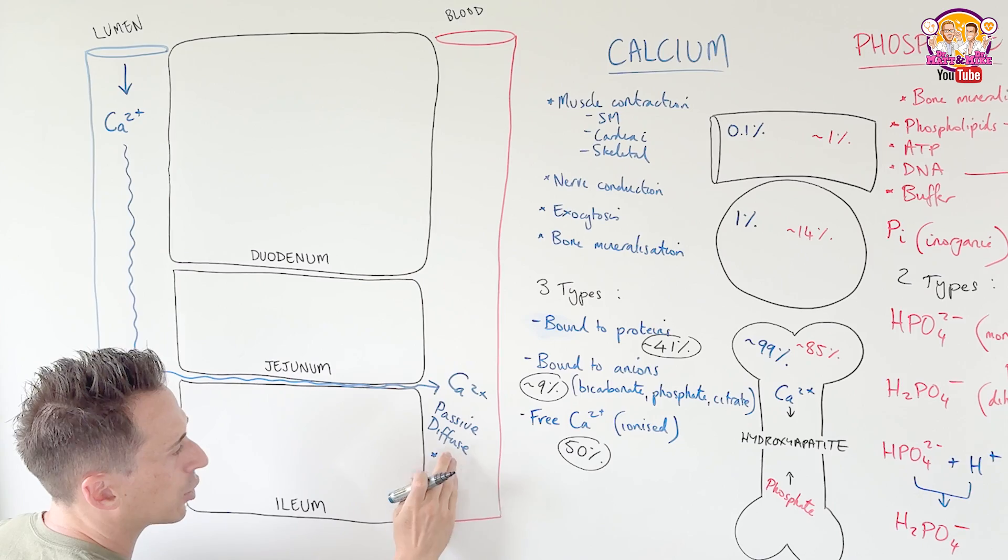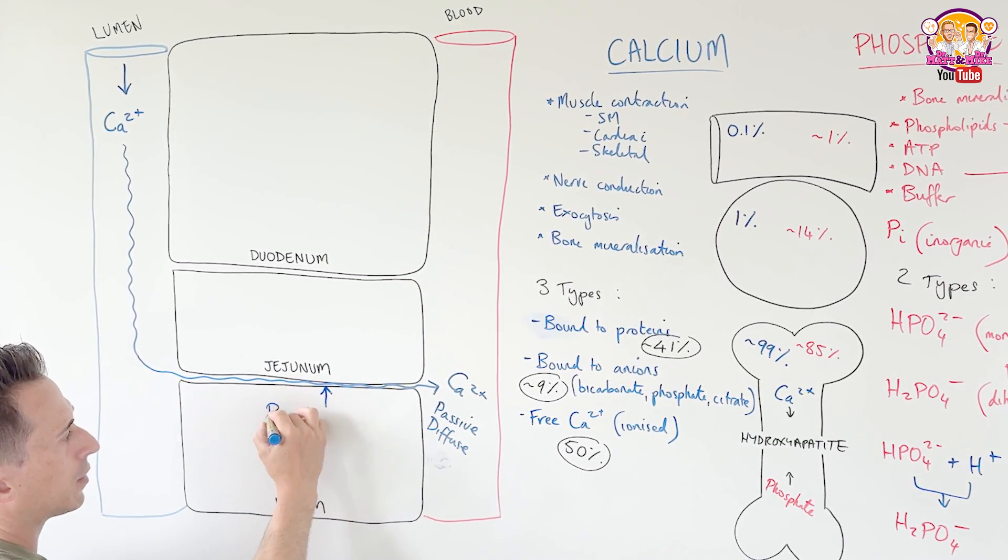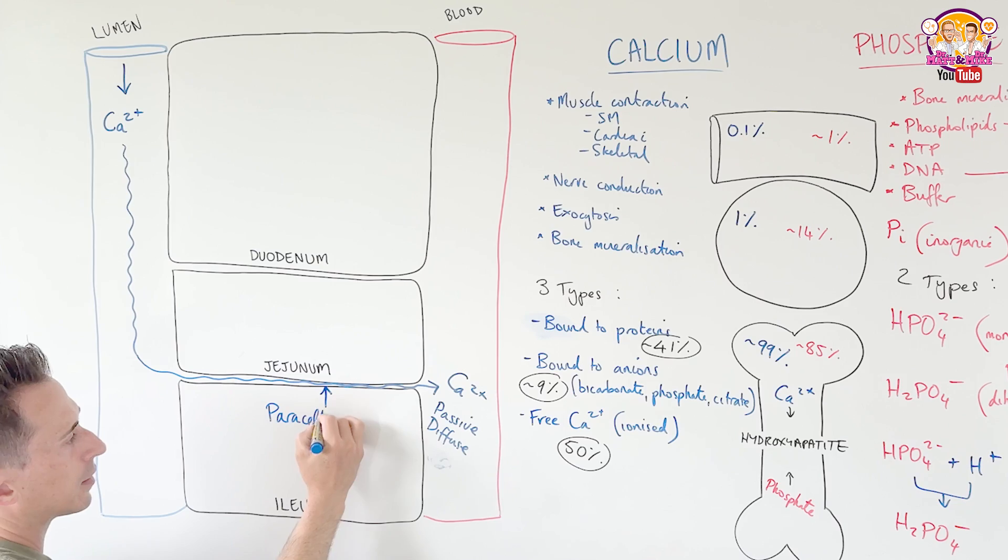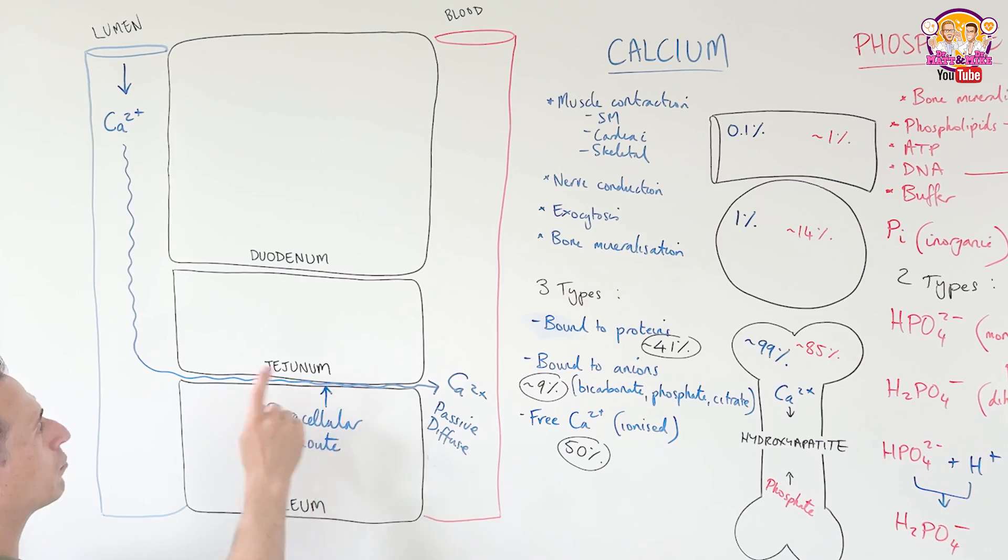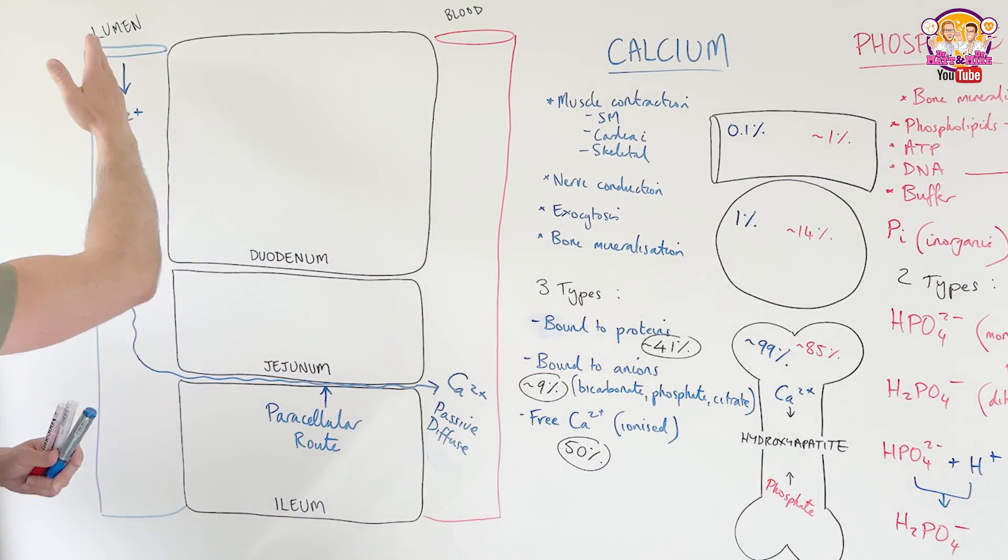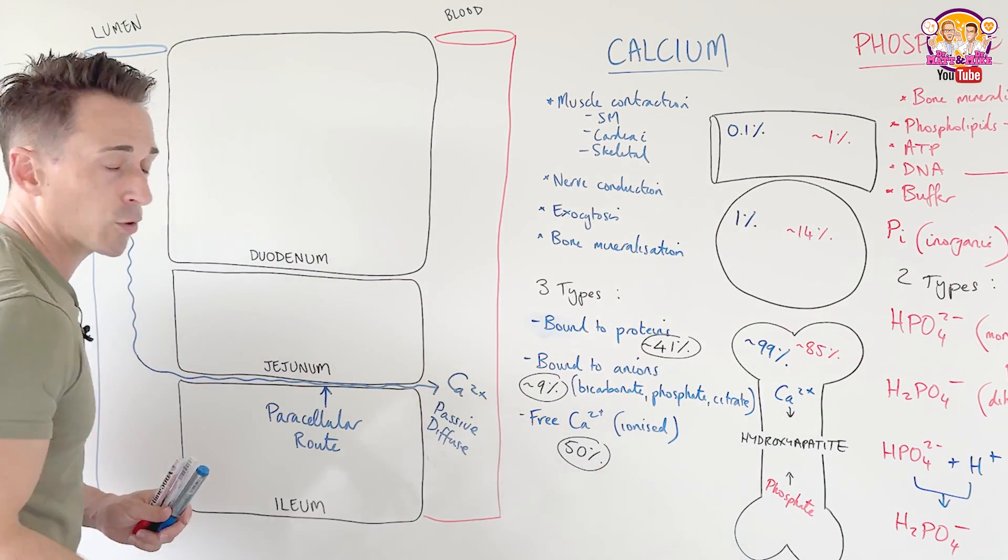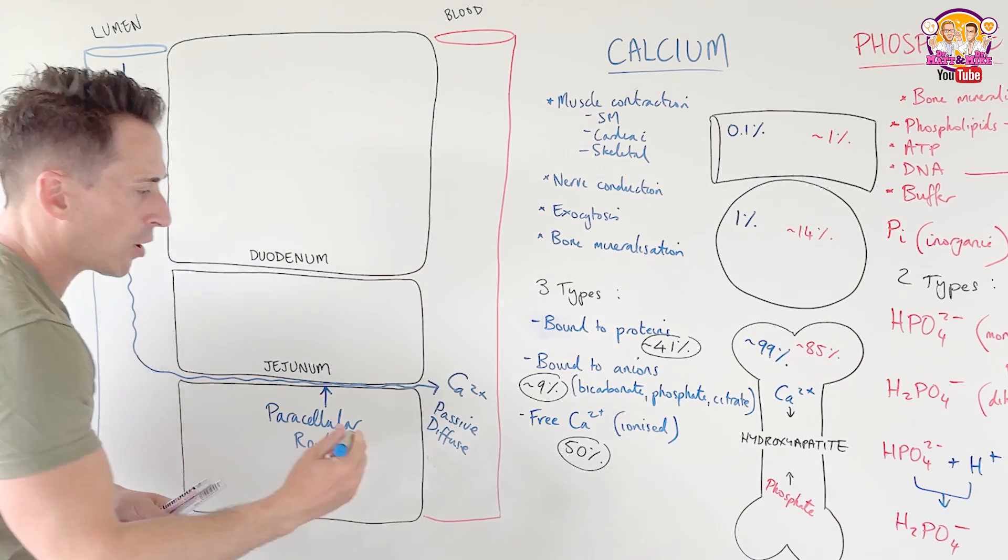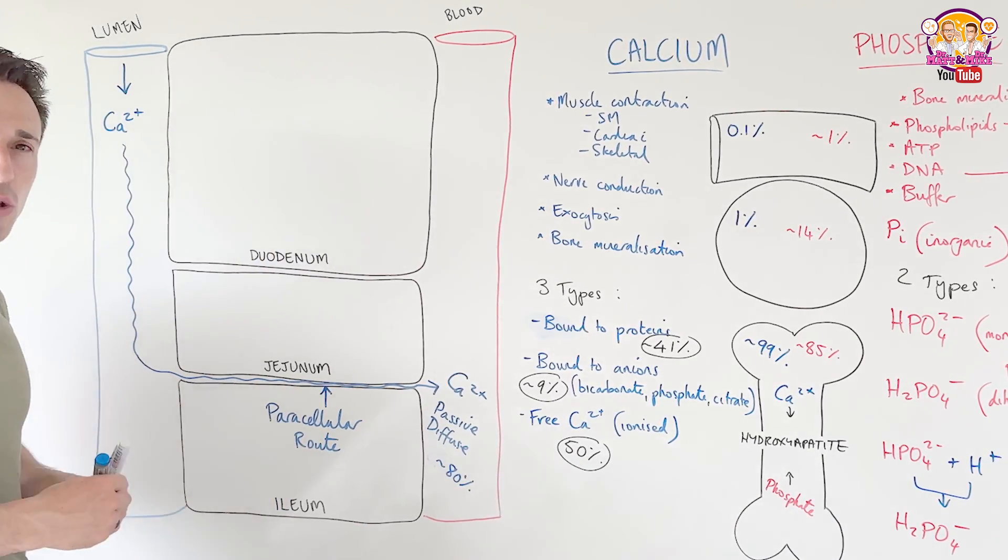This is called a paracellular route. This is the way it's taking. Now, how does it move through? If it's passive diffusion, it will do this when it goes from a high concentration gradient to a low. So if you ingest a lot of calcium and your blood has lower calcium, this is how it moves through. This is going to be the majority. This is going to be around about 80% of our calcium gets absorbed this way.